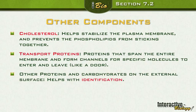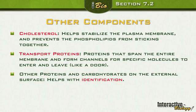There are also proteins and carbohydrates on the external surface of the membrane. These help with identification — they help the body know what type of cells are in a specific location. The immune response, for example, uses this so it can identify the cells it needs to identify and respond accordingly.